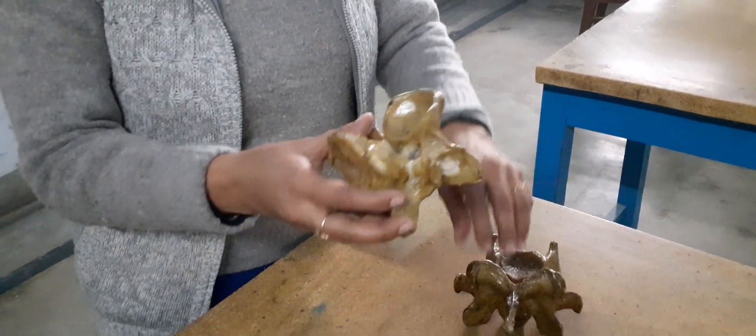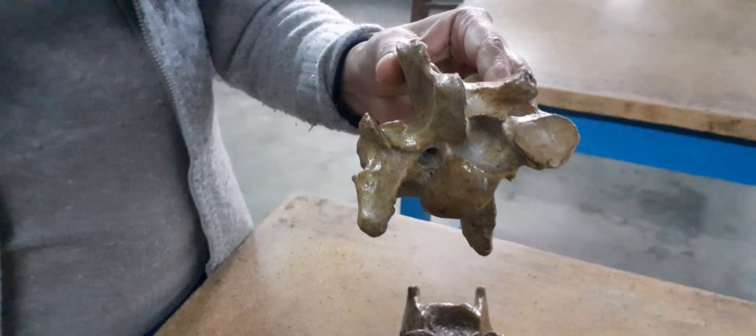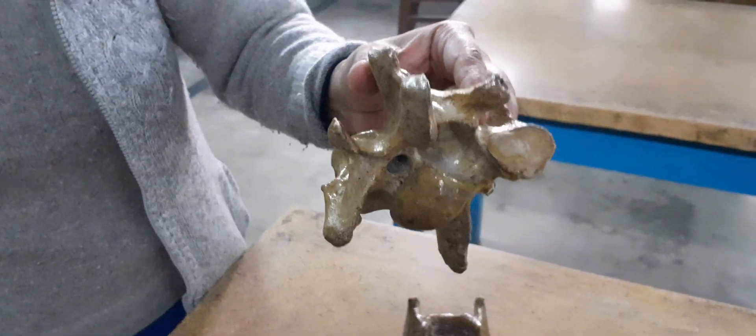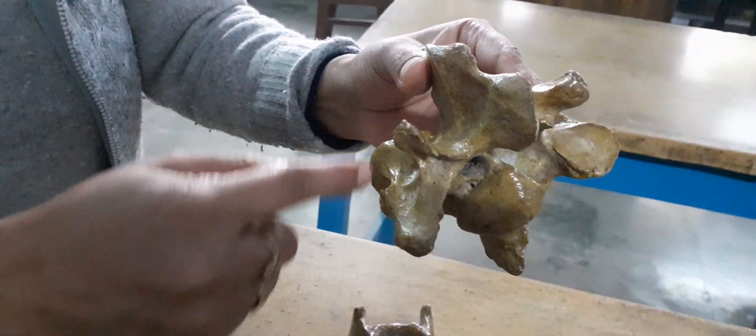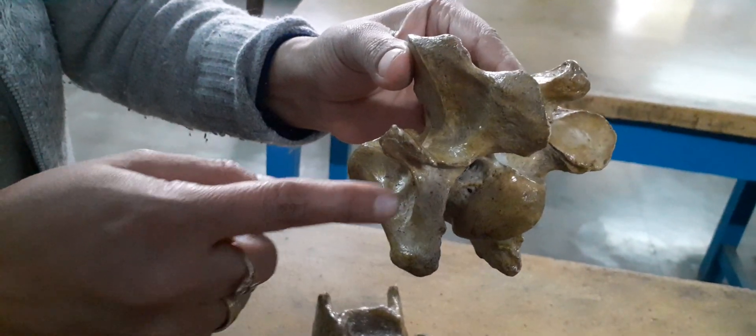if you will see this typical cervical vertebra, then it is having this transverse process. It is branched and the lower process is like this.